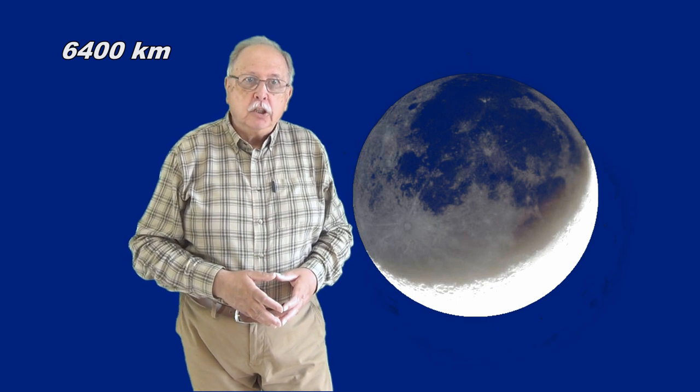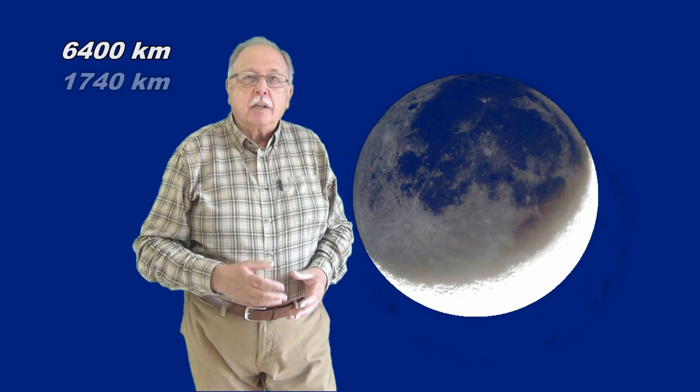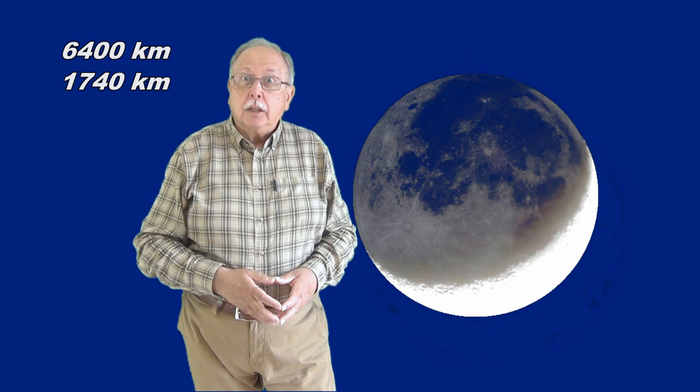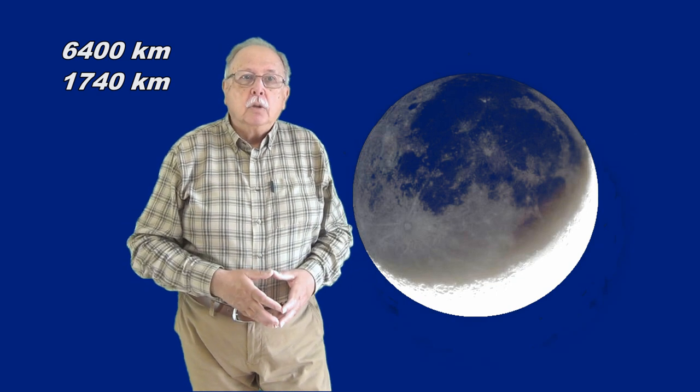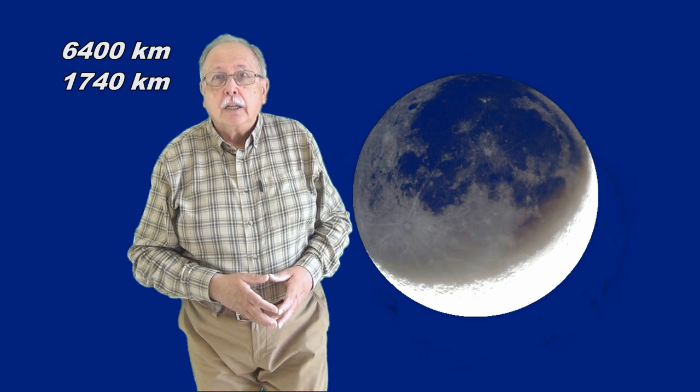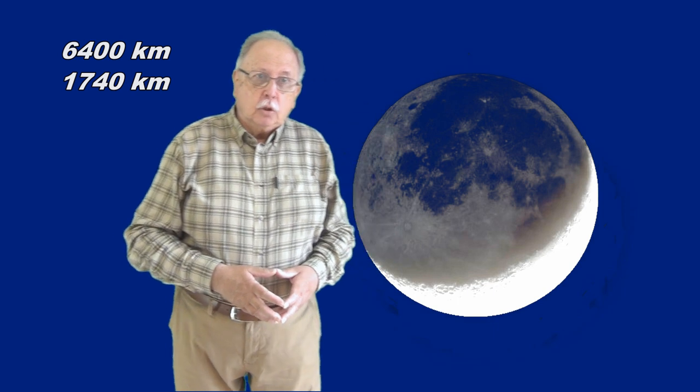Razele aproximative ale celor două corpuri cerești sunt 6400 de kilometri în cazul pământului și abia 1740 de kilometri în cazul lunii. Ceea ce înseamnă că raza, deci și diametrul pământului, este de peste trei ori și jumătate mai mare decât diametrul lunii.